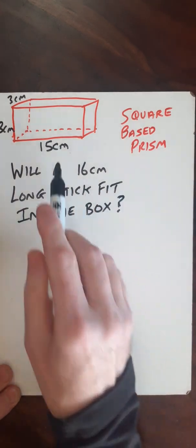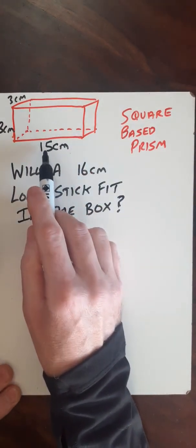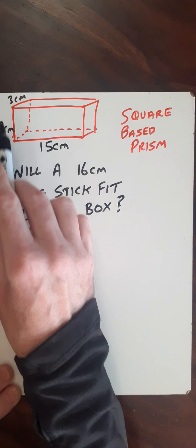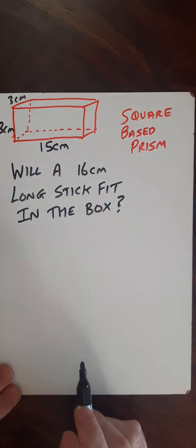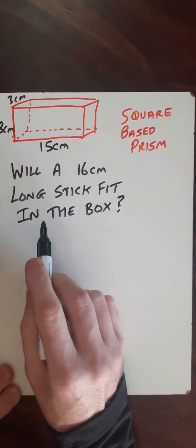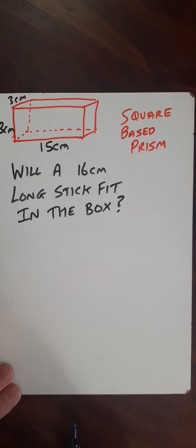So here I've got a square base prism with dimensions 15cm length and 3cm for the square ends. Now will a 16cm long stick fit in this box?